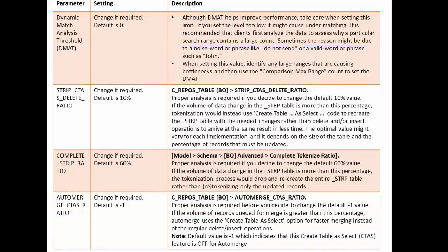Dynamic match analysis threshold is a property to consider changing if required — the default value is zero. The next property is 'Strip CTS Delete Ratio' — change if required, default value is 10%. Proper analysis is required while optimizing this property. If the volume of data change in the strip table is more than this percentage, strip tokenization would use 'Create Table As Select'. Code to recreate the strip table would be needed rather than delete and insert operations, to achieve the same result in less time.